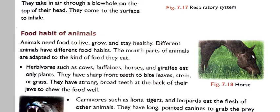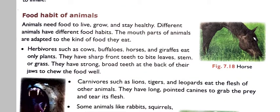Hello everyone, welcome to Class 5th Science Chapter 7: Animal Living and Surviving. In the previous volume we have learnt about the types of animals, categories of animals, breathing in animals, and movement in animals. Now we will learn about the food habits of animals. Different animals have different eating habits. So let's start.